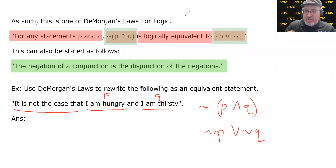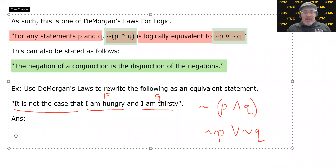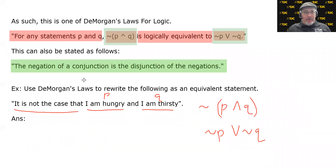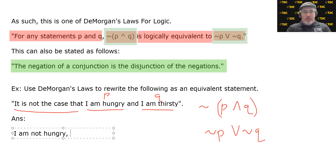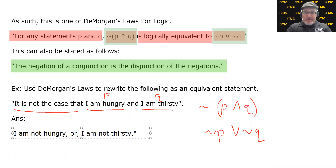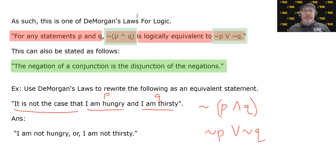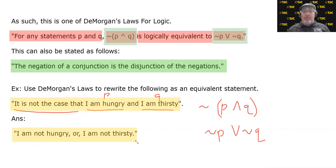Distribute the negation and change the connective. Translating back into words: negation of P is 'I am not hungry,' disjunction 'or,' negation of Q is 'I am not thirsty.' So this statement is logically equivalent to the one we were given. Specifically, 'It is not the case that I am hungry and I am thirsty' is the same as 'I am not hungry or I am not thirsty.'